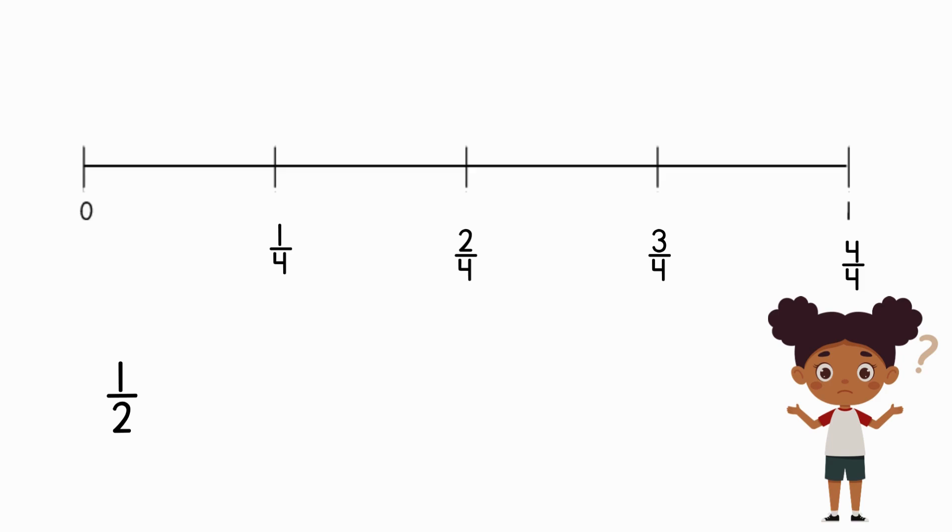We want to find an equivalent fraction, or equal fraction, to one half that has a denominator of four. Here's the trick. We can multiply the top and bottom of one half by the same number. We want a denominator of four, so we can multiply the two by two. Two times two is four, so we have the denominator we need.